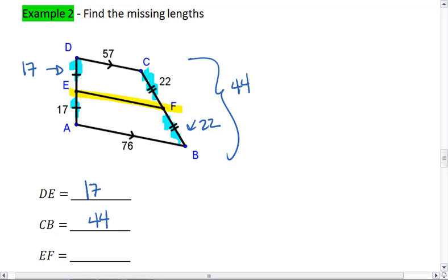And lastly, for EF. EF is going to equal 1/2 of our two base numbers added together. So EF equals 1/2 of 57 plus 76.